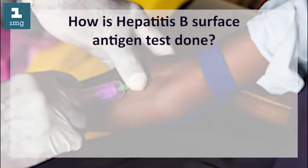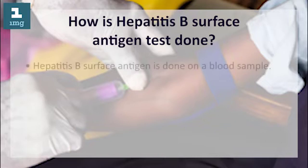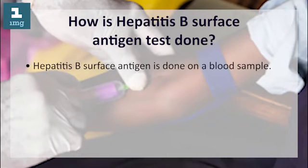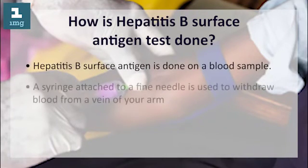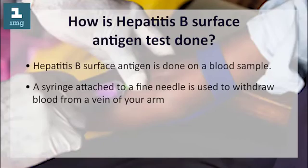How is the hepatitis B surface antigen test done? The hepatitis B surface antigen test is done on a blood sample. A syringe attached to a fine needle is used to withdraw blood from a vein of your arm.